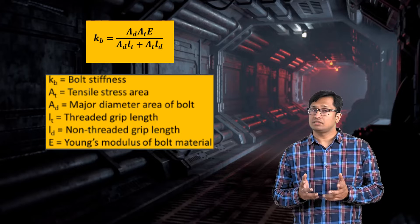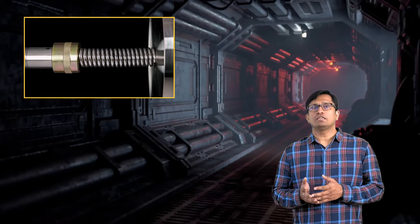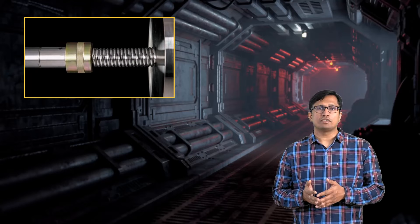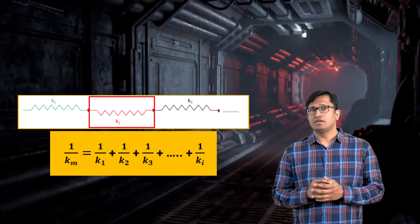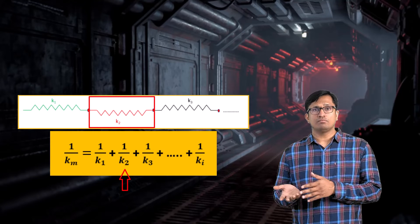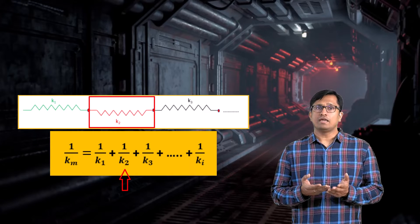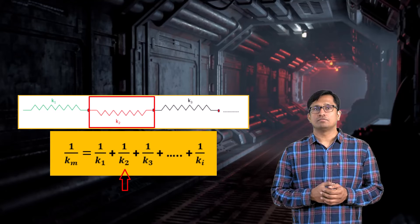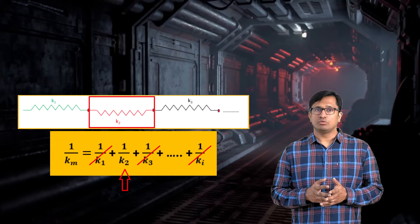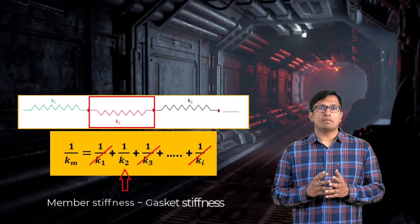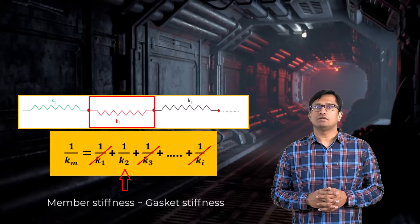Calculating the member stiffness is slightly more involved. Each clamped part acts as a compressive spring and the total member stiffness is calculated by considering that these compressive springs act in series. If one of the clamped parts is a soft gasket, its stiffness relative to the other members is very small and hence this term dominates in the given formula. In such cases, all other terms can be ignored and the member stiffness can be approximated to the gasket stiffness.